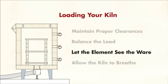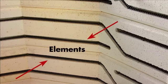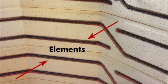Let the elements see the ware. As the kiln heats up, more and more of the heat inside the kiln is transferred by radiation from the heating elements. Therefore it's important to make sure that each piece of ware has line of sight exposure to the elements, even if it's just a portion of the ware.